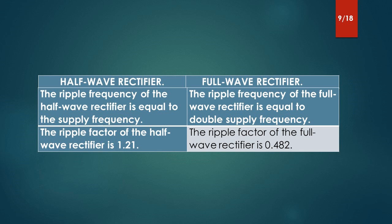The ripple frequency of the half-wave rectifier is equal to supply frequency. The ripple frequency of the full-wave rectifier is equal to double the supply frequency. The ripple factor of the half-wave rectifier is 1.21. The ripple factor of the full-wave rectifier is 0.482.